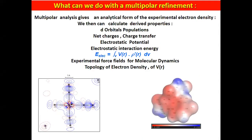The multipolar analysis gives you an analytical form of the experimental electron density. We can then calculate properties: orbital population, charge, electrostatic potential, and electrostatic interaction energy — very important for using experimental molecular force fields for molecular dynamics. Here is one example of a static electron density map we obtained on sodium nitroprusside, where you see very clearly the depletion of electrons in the dx²-y² direction and the build-up of electrons in the dxy direction.